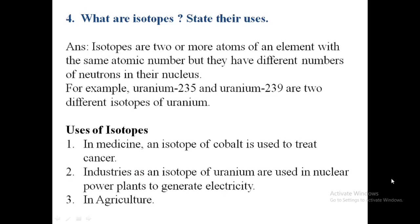Fourth question: what are isotopes and state their uses? Isotopes are two or more atoms of an element with the same atomic number but they have different numbers of neutrons in their nucleus. For example, uranium-235 and uranium-239 are two different isotopes of uranium.